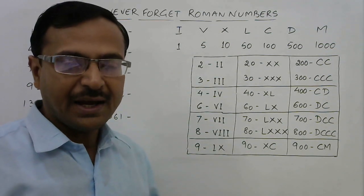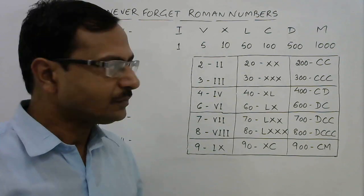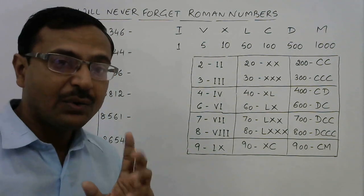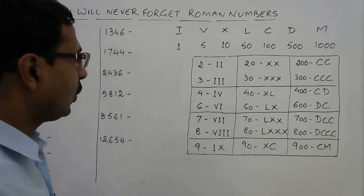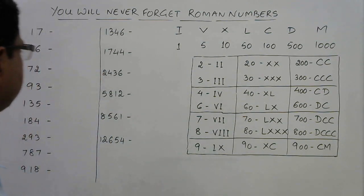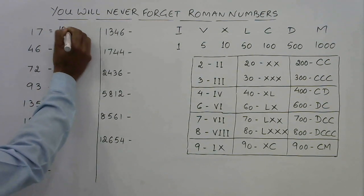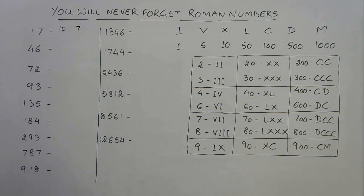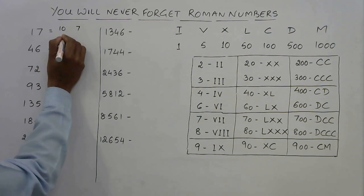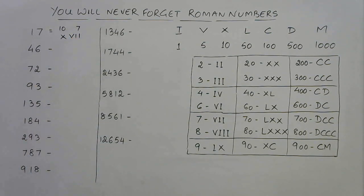Let's see some examples. For two-digit numbers, take 17. Break it into tens and ones: 17 is 10 plus 7. Ten is written as X, and 7 is written as VII. Write them together and you get XVII — the Roman numeral for 17.